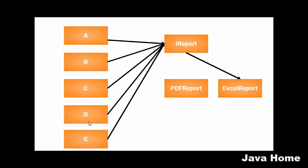Abstraction is about hiding the implementation details. The implementation details are present in Excel report, which is hidden from classes A to E. The interface contains only method signatures — no implementation — so the outside world is exposed with only the features and hidden from the implementation. The benefit we get from abstraction is that you can easily switch from one implementation class to another without affecting the external system that depends on it. That is exactly what abstraction is — that is the benefit we get from abstraction in object-oriented programming. I hope this session helped you understand what abstraction is. Thank you so much.